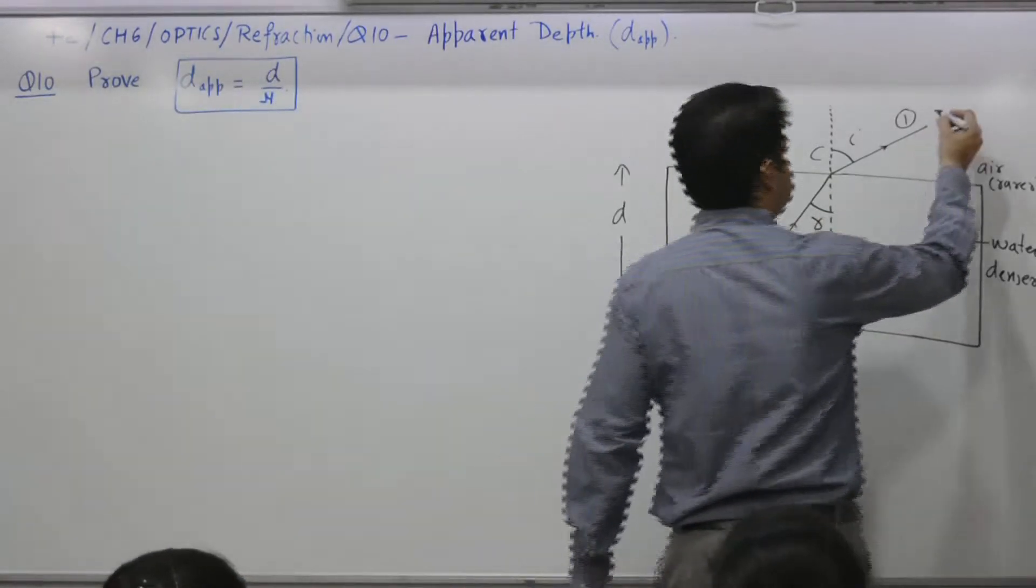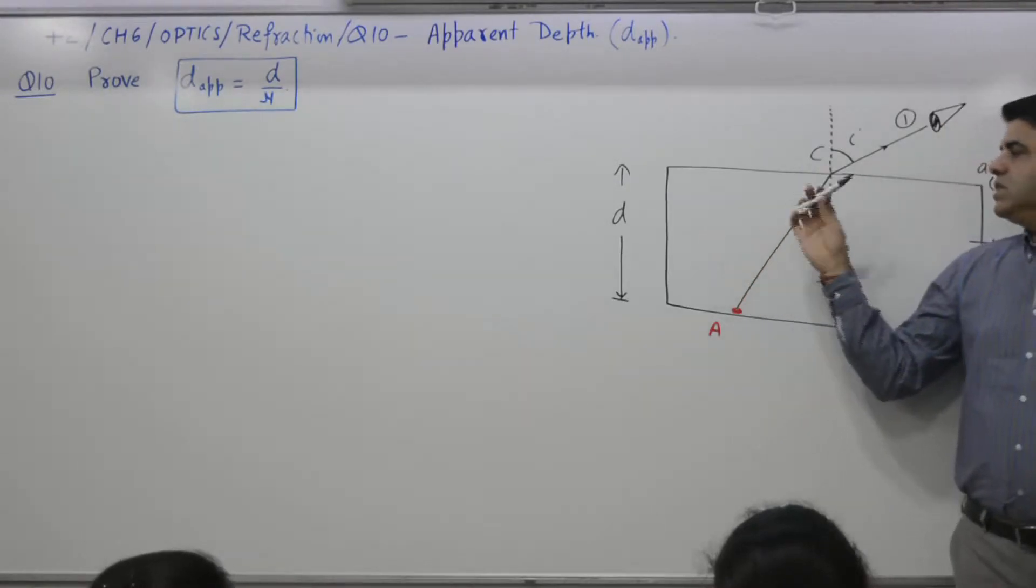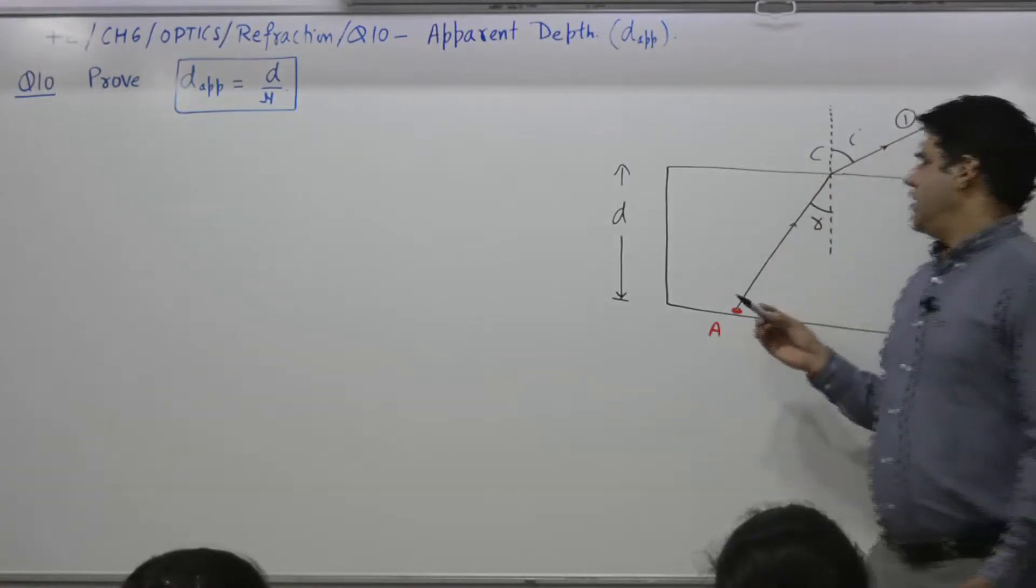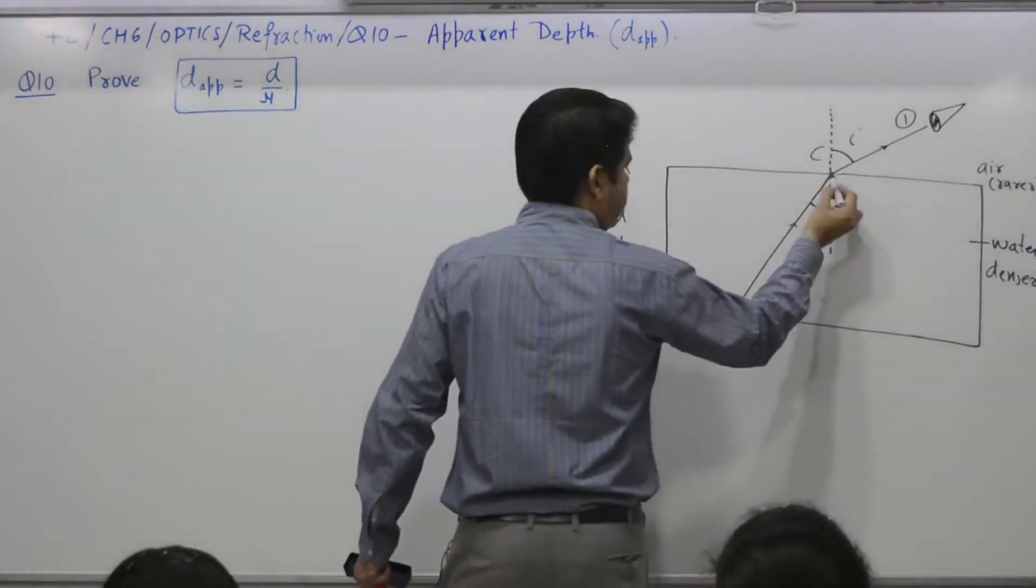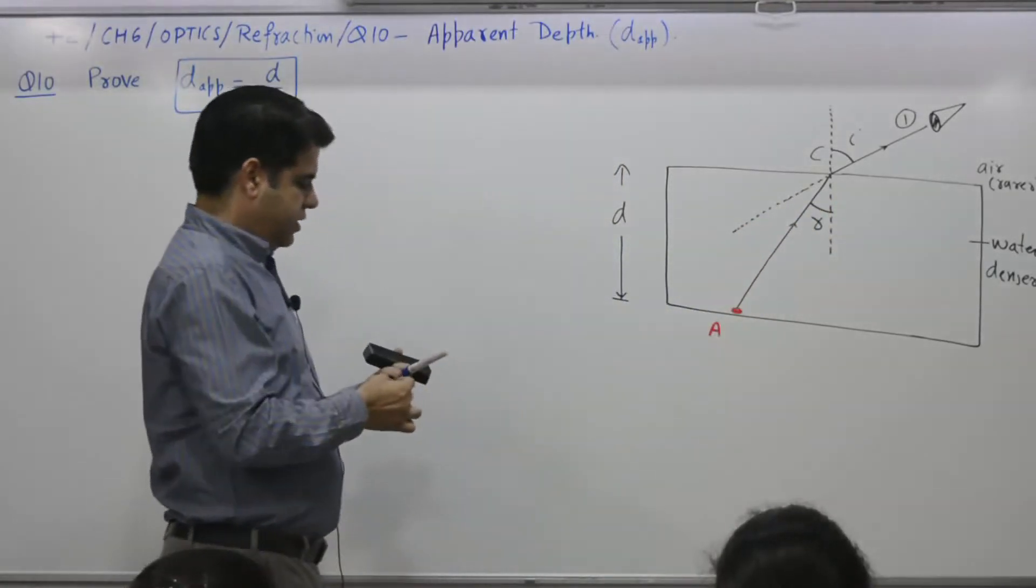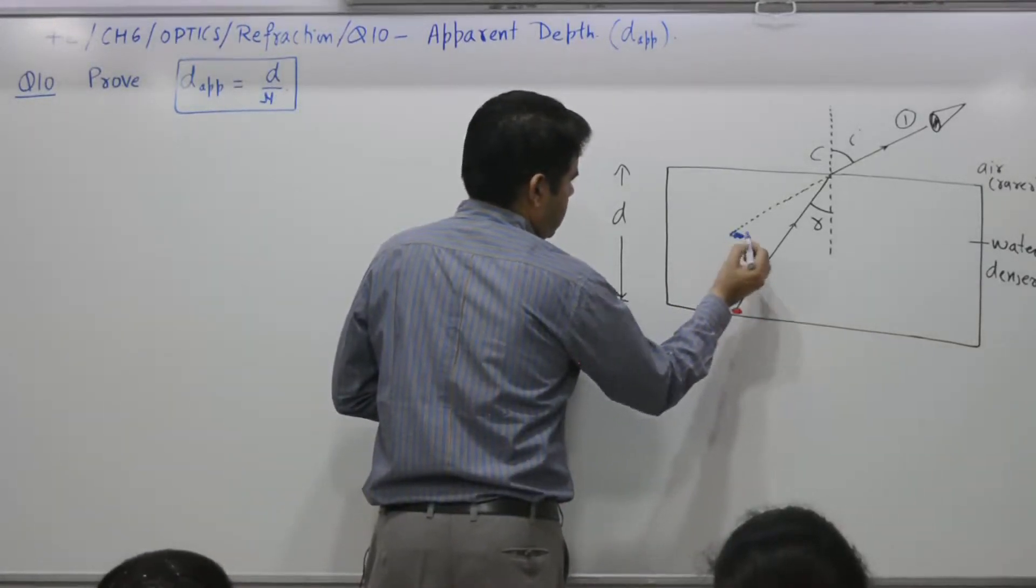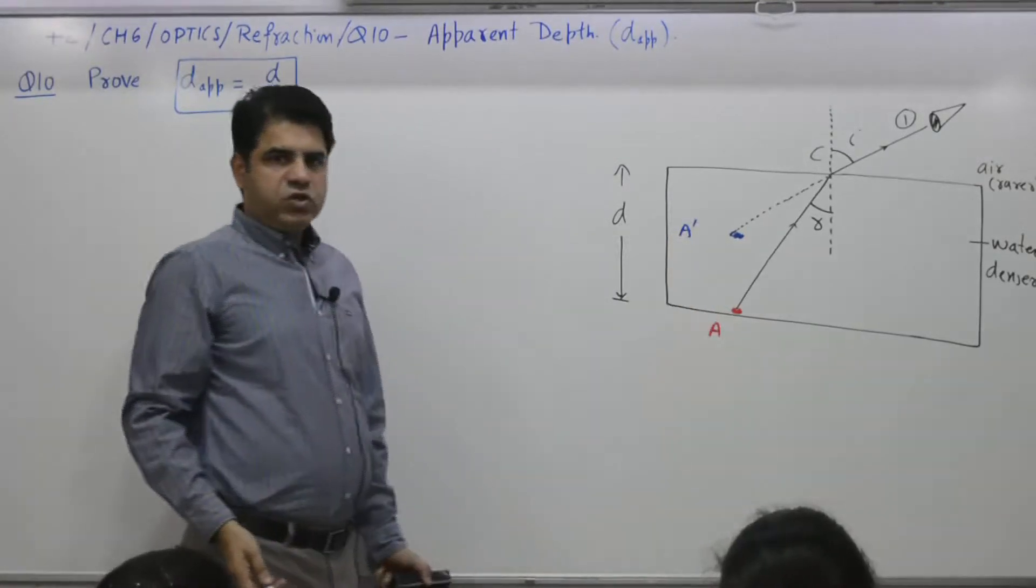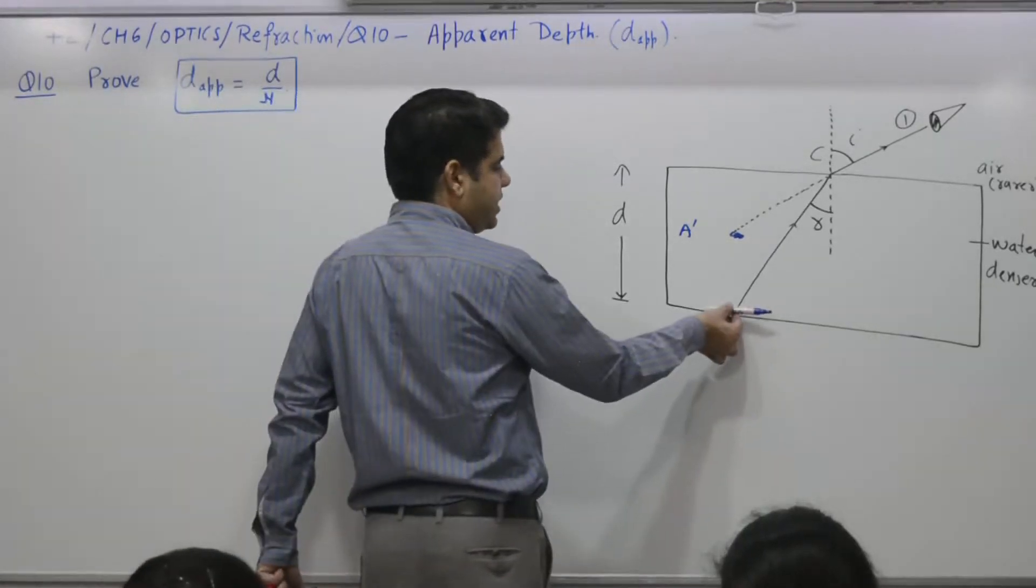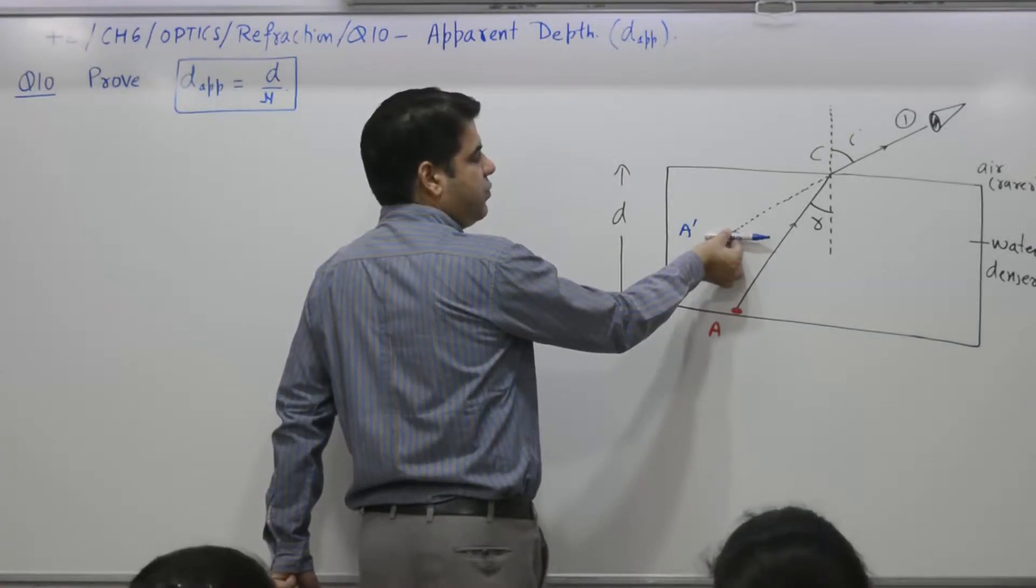If an observer is there, this observer will see this ray to be coming, not from A, but from some other direction. Observer finds the ray to be coming from this point. Let this be termed as A dash. If you see number of rays coming, the object A appears to be up to A dash.